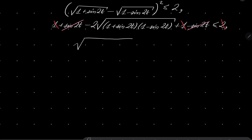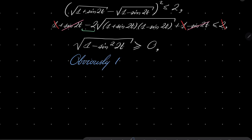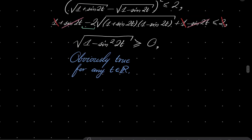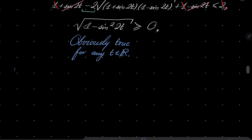Dividing by −2 we get √(1 − sin²(2t)) ≥ 0. The inequality flips because we divide by −2. Notice that this is obviously true for any real number t, because the square root of anything is always greater than or equal to zero. So nothing special here. Let's tackle inequality number 1.